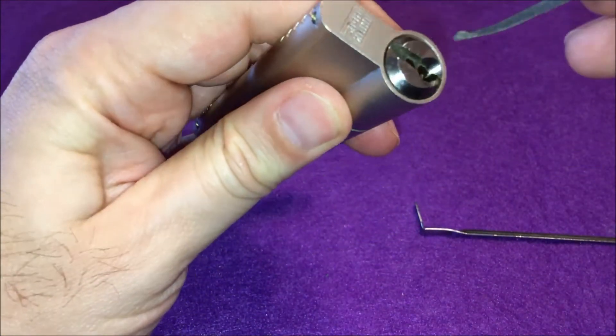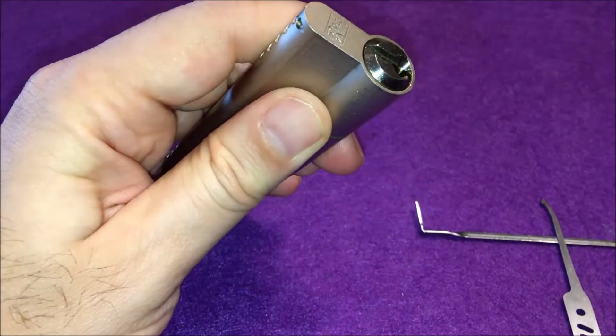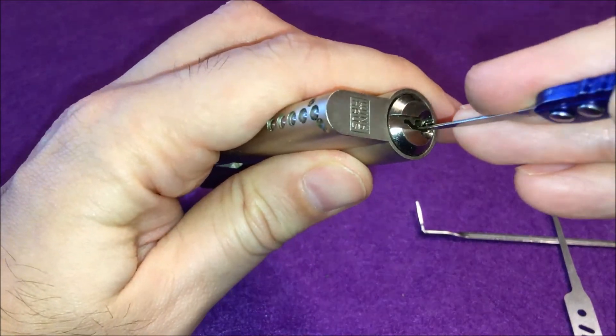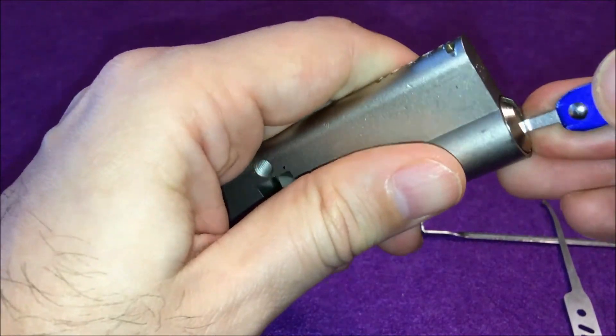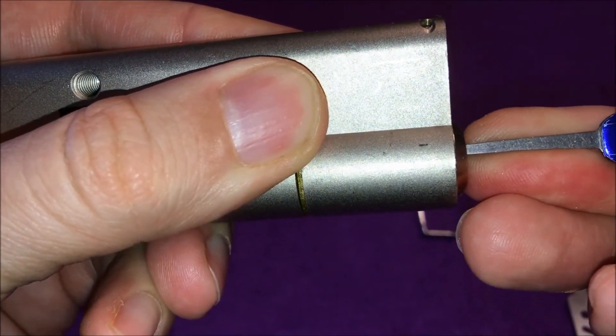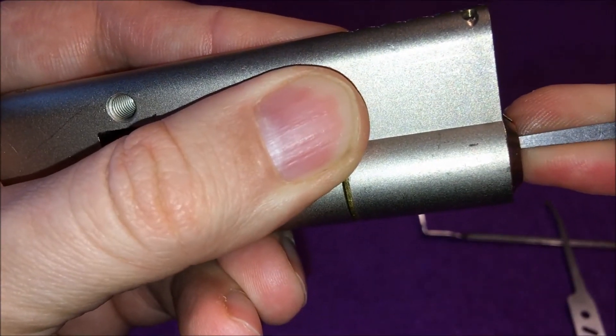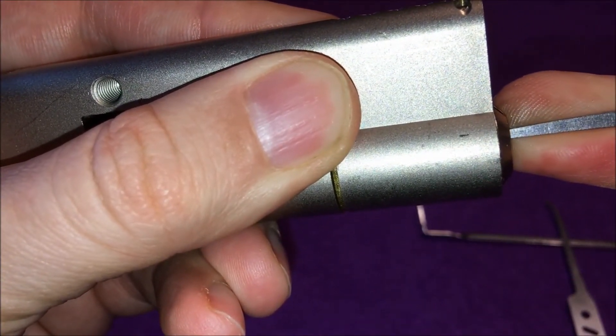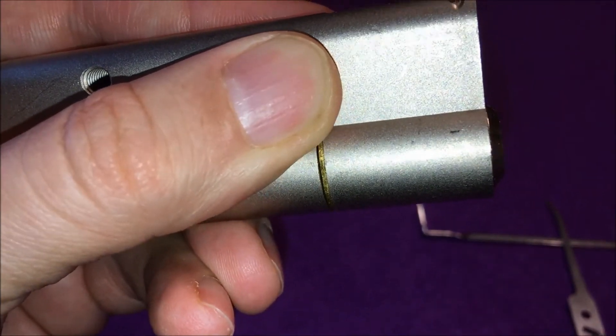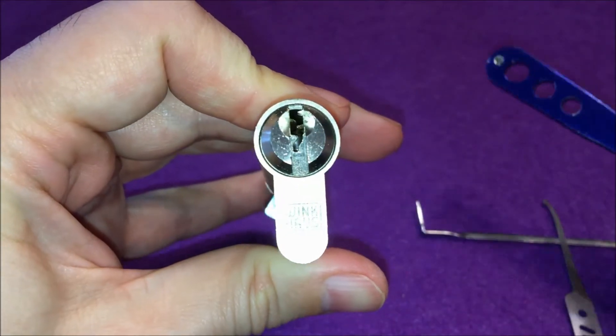But let's count the pins. It says there are five here. Hopefully they are really five. Let me get another pick that would be easier to slide in, see how many pins we hear clicking. That was five, so seems like all pins are there. There are at least two spools.